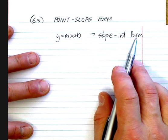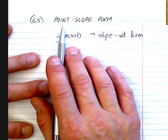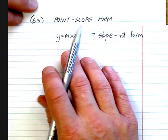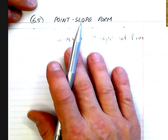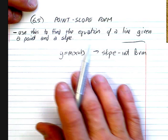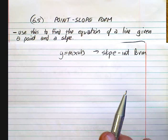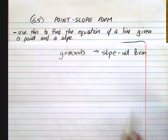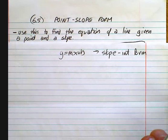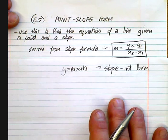We have another form of the equation that is used in a different situation. It's used to find the equation of a line given a point and a slope, but it's when we can't do it any other way. And it's derived from the slope formula.